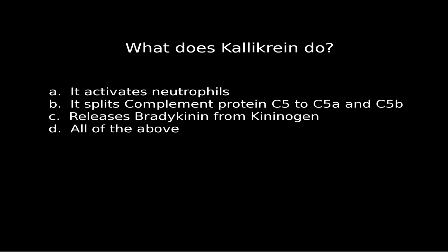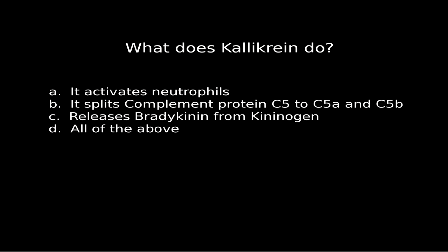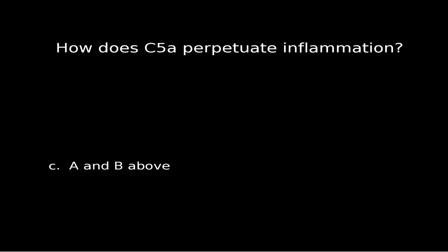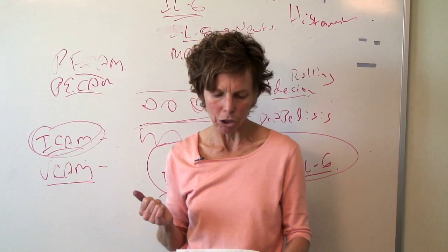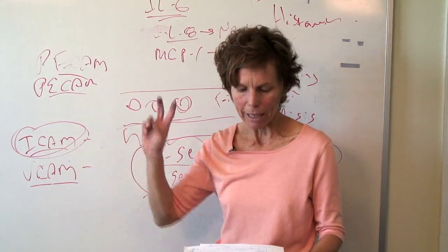Number three: what does kallikrein do? The answer is all of the above — D. It activates neutrophils, it splits complement protein C5 to C5a. Remember, C5 complement is in your blood, so it's ready there to become active. And it releases bradykinin from kininogen. Number four: how does C5a perpetuate inflammation? Both A and B: it's a chemotactic agent for neutrophils at the site of infection or trauma, and C5a causes degranulation of the mast cells — i.e., histamine release. Remember, histamine is going to induce P-selectin.